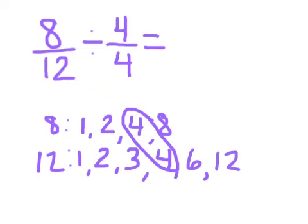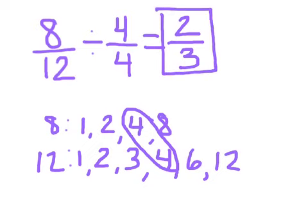And now I divide again. Eight divided by four equals two. Twelve divided by four equals three. And there in one step, I have my fraction reduced as low as it can go.